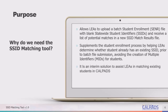The match tool supplements the student enrollment process by helping LEAs determine whether a student already has an existing SSID prior to the batch file submission, avoiding the creation of multiple identifiers for students. It is also an interim solution to assist LEAs in matching existing students in CALPADS. As referenced in Flash number 221, this is a planned short-term solution that replaces the SSID candidate list. This tool facilitates matching prior to assignment, allowing you to retrieve potential candidates and select them before SSID assignment.